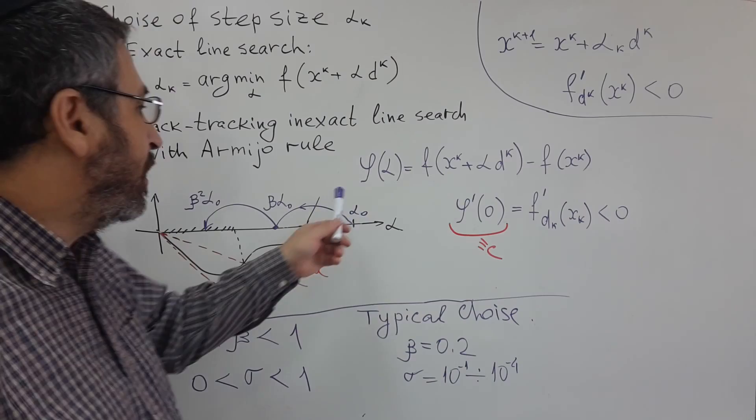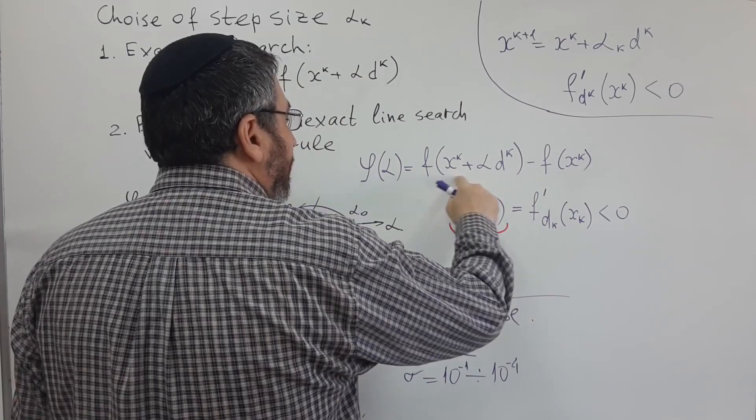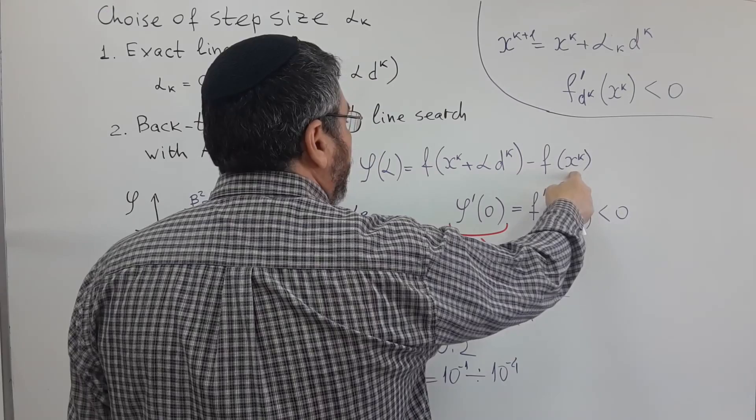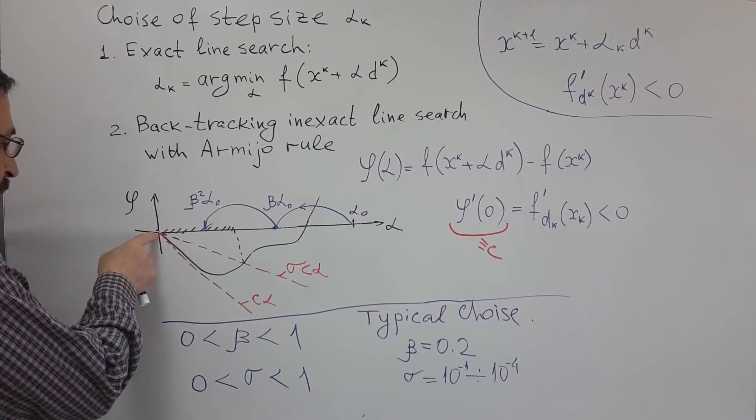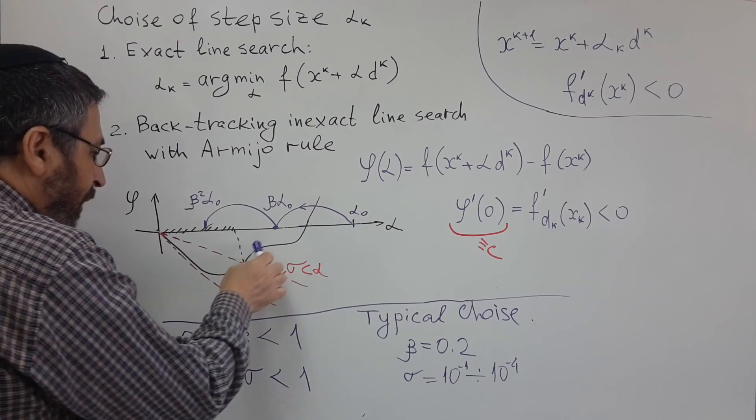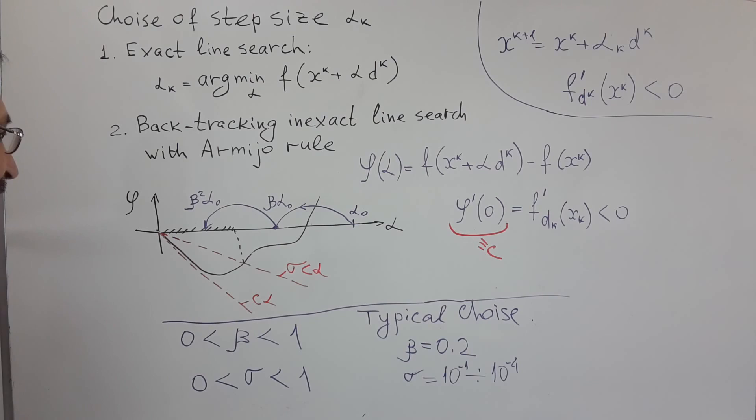We want to roughly minimize this f of xk plus alpha dk. We subtract the value of f of xk in order to have phi of alpha, which passes through origin. Its value is zero when alpha is zero. And this black line is the typical plot of this phi of alpha.